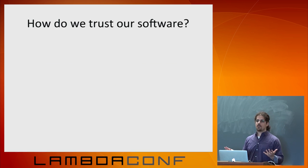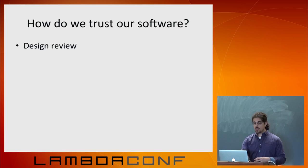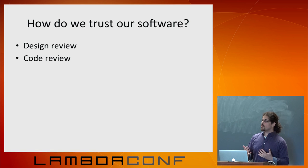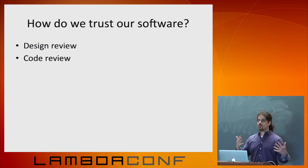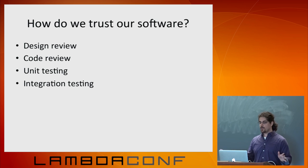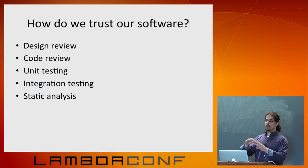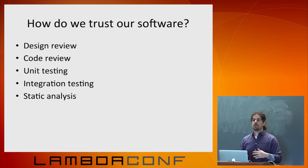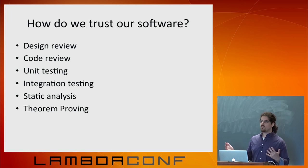So how do we trust our software? There are many ways. One is design review — before we get started, making sure the thing we're thinking about doing even makes sense. Can we identify flaws prior to starting? Second is code review — as we go along, evaluating the software our peers are writing and identifying potential problems. Then unit testing and integration testing. And then static analysis — I'm lumping together both type systems from human-type languages and tools like Coverity and FindBugs — identifying potential problems in source code or Java bytecode before you ship.